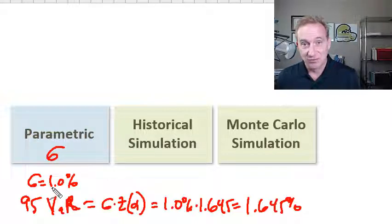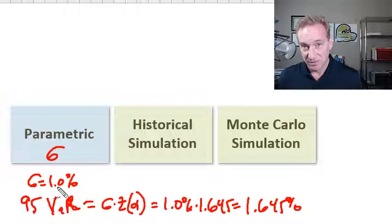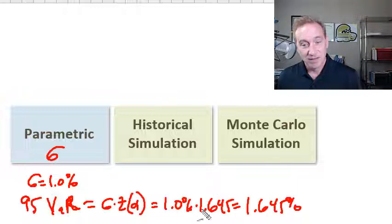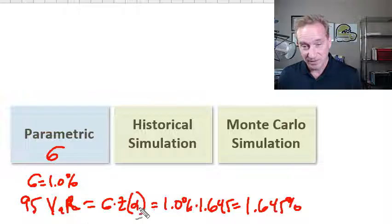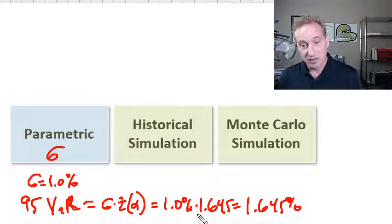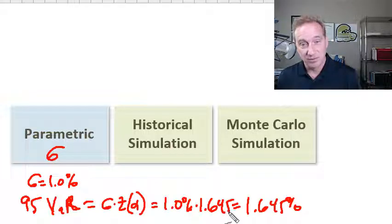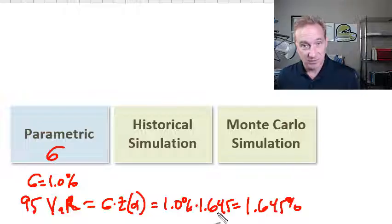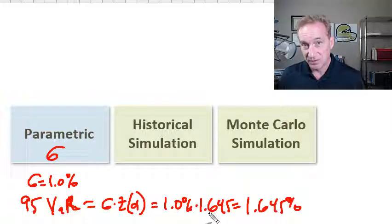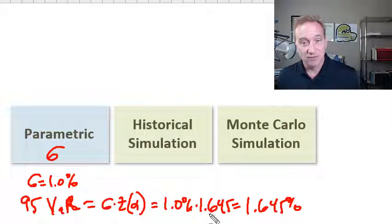This normal linear or parametric approach to Value at Risk is very simple. I sometimes say it's just a multiplier of volatility, taking that sigma and multiplying by the standard normal quantile associated with our confidence level. If we wanted 99% confidence, we would use 2.33 here instead.